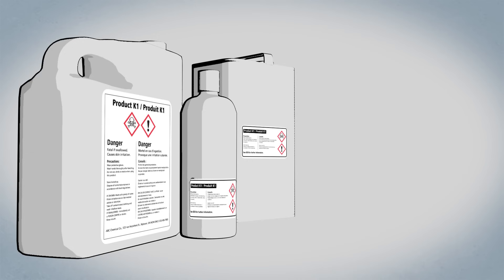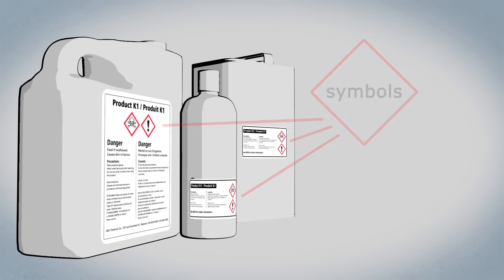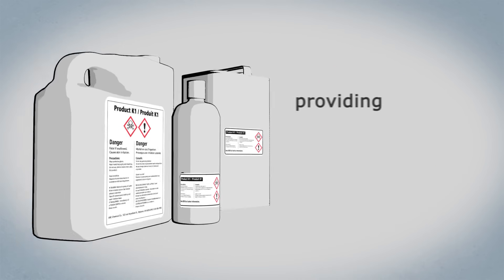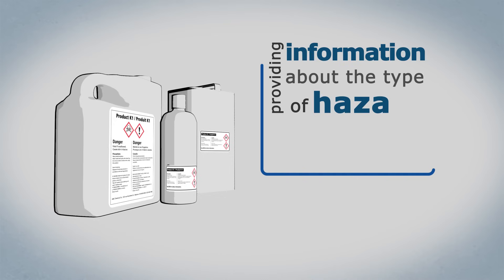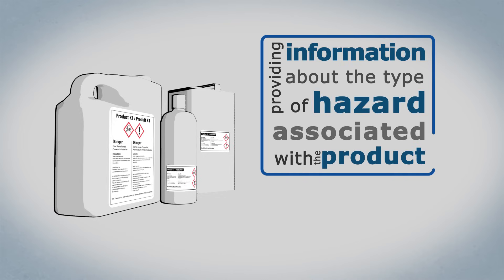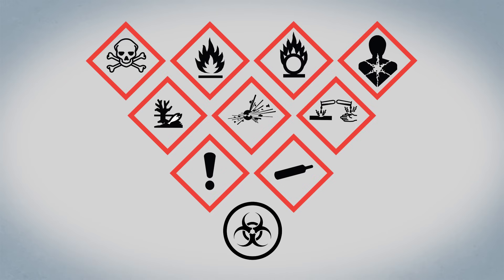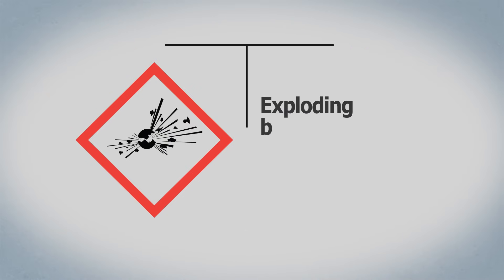So what are WHMIS labels? Each hazardous product must have a label with symbols and hazard statements, providing information about the type of hazard associated with the product. There are 10 WHMIS symbols, and you need to look for them and recognize the dangers they represent.